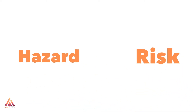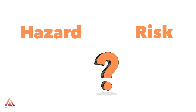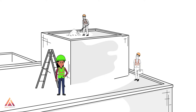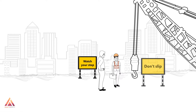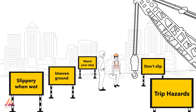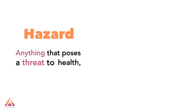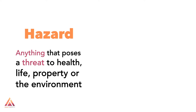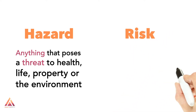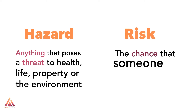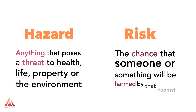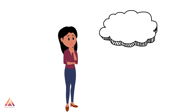The words hazard and risk are usually used interchangeably, but there are a few important differences between them. Knowing these differences can help us put our energy into significantly lowering risk rather than trying to eliminate every hazard. A hazard is a source of danger — think of it as anything that poses a threat to health, life, property, or the environment. A risk is the chance that someone or something will be harmed by that hazard.